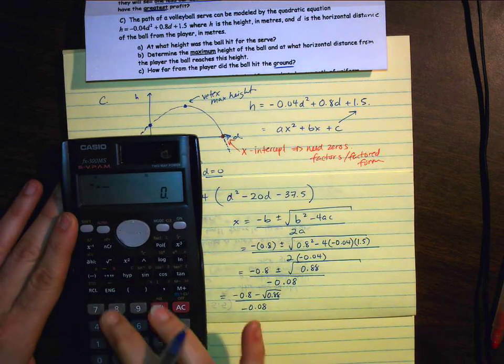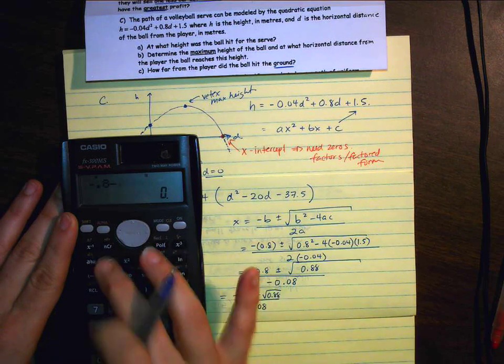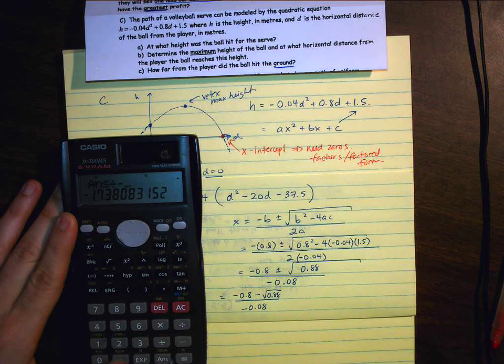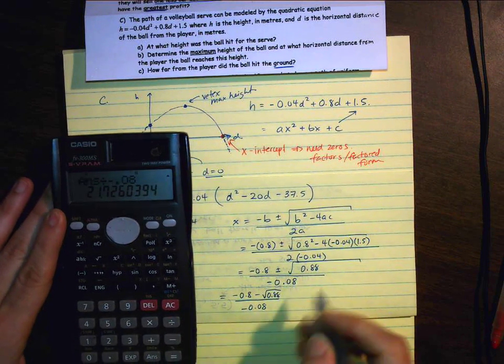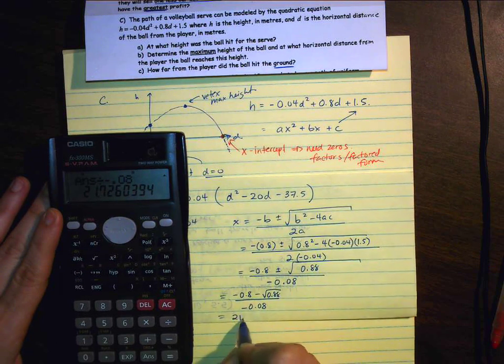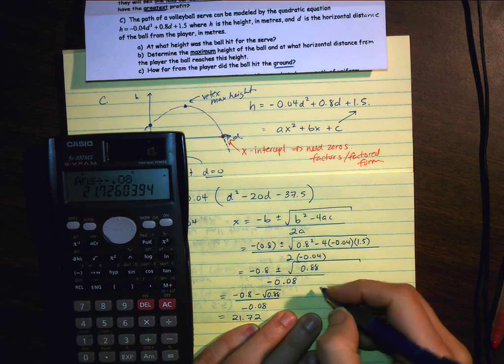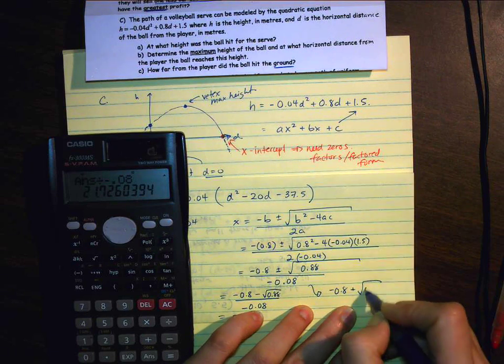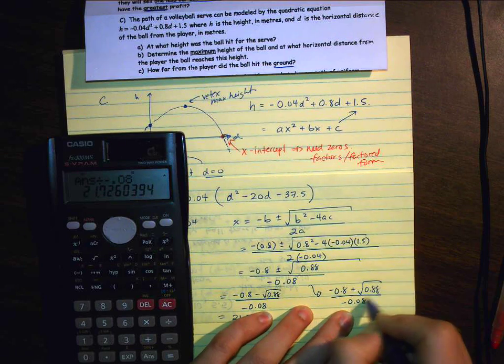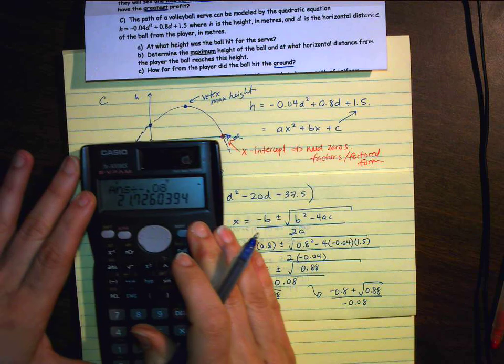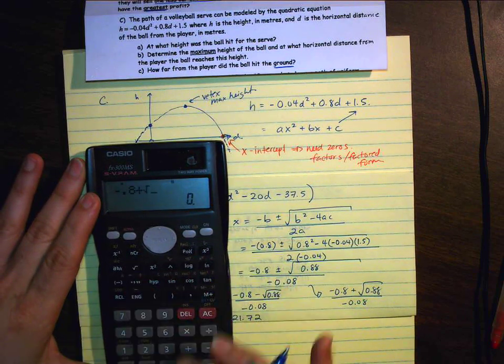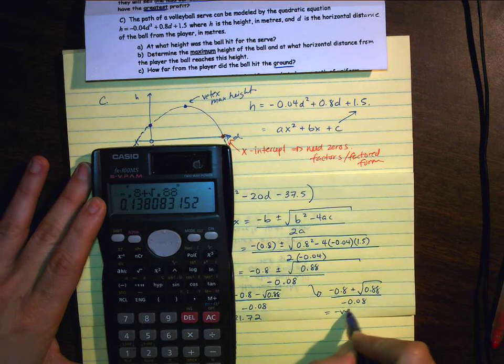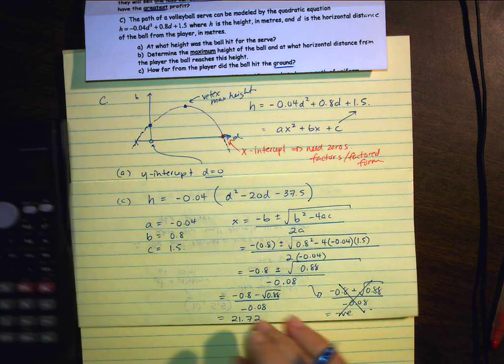So let's do that. Negative 0.8 minus the square root of 0.88 equals, and I'm going to divide by negative 0.08. I get 21.7. And just to prove that this value should be negative, go ahead and check this. So negative 0.8, I'm going to add 0.88 and divide by negative 0.08. But all I have to really do is check to see what that numerator is. So if I take negative 0.8 and I add the square root of 0.88, which is going to be a really small number, and that's going to be a small number divided by a negative number is still going to be a negative value. Well, that's not possible. So my answer is back here.